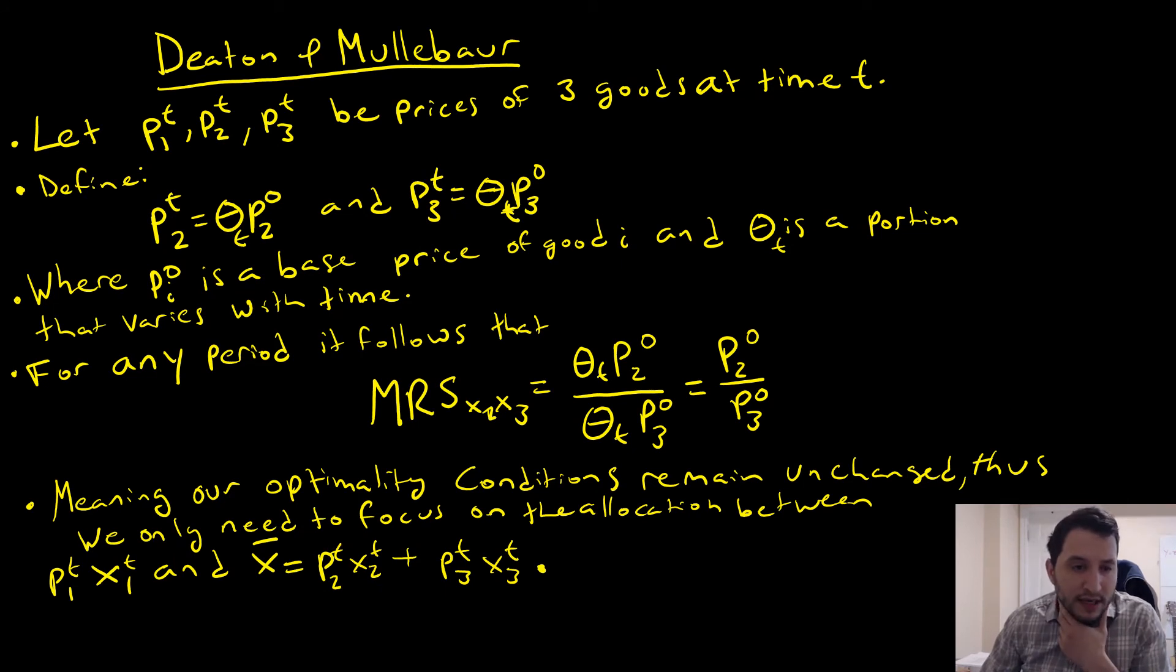So for Deaton and Mulbar, they use the following. They define P1, P2, and P3 to be prices of three goods at time T. And we're also going to say P2 and P3, their distinguishing time factor is determined by this theta term jointly. And we have this P not, which is this zero here at the top here, which is some base period for the price of good I, and theta is the portion that varies with time.